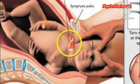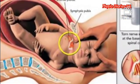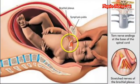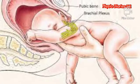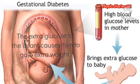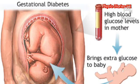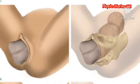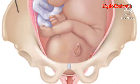Various risk factors predispose the child to excessive pulling during delivery. These include maternal diabetes, prolonged labor, breech presentation, large birth weight, small maternal pelvis, and improper obstetric care during delivery.